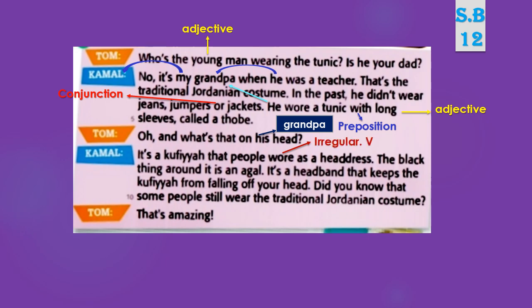'Wore' here is a regular verb. 'Headdress' is a compound noun. The pronoun 'it' refers to the headdress. It's a headband that keeps the kufiya from falling off your head — إذا تحاط على الكفية من السقوط من الرأس. Did you know that some people still wear the traditional Jordanian costume? هل تعلم أن بعض الناس ما زالوا يرتدون الزي التقليدي الأردني؟ That's amazing! 'Falling off' is a phrasal verb — فعل مركب. 'Headband' is also a compound noun.